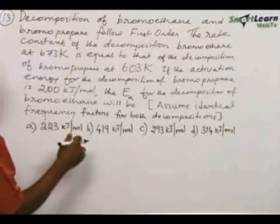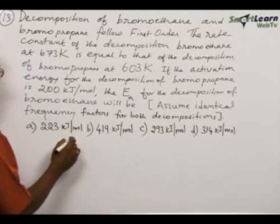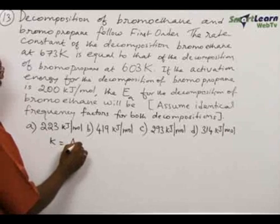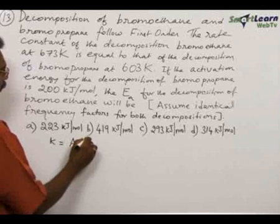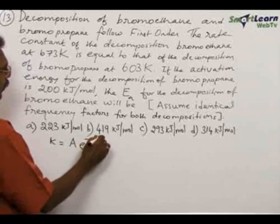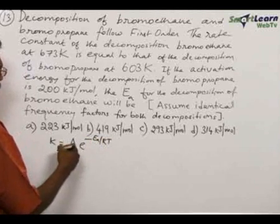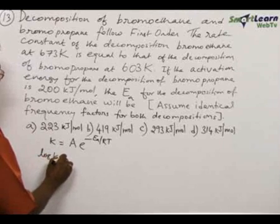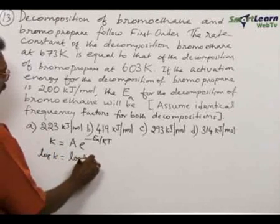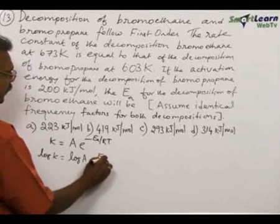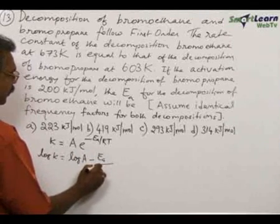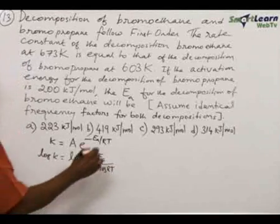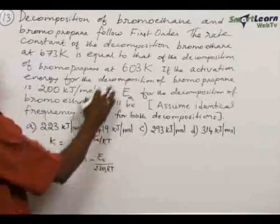This problem is solved on the basis of the Arrhenius equation for rate constant: k equals A times e to the power of minus Ea by RT. In logarithmic form we can write log k equals log A minus Ea by 2.303 RT. And here, as per the problem, the rate constants are equal.